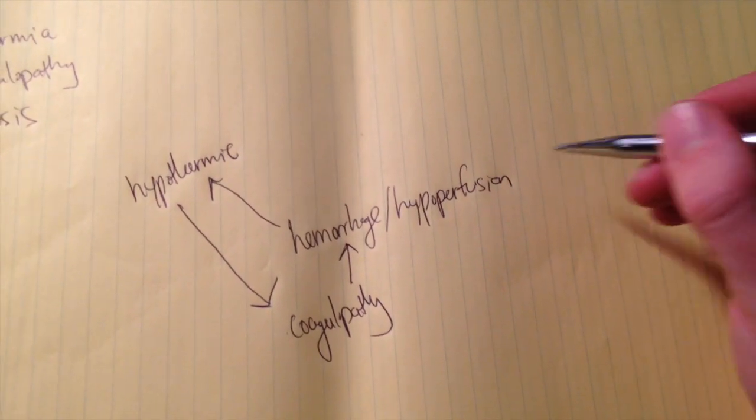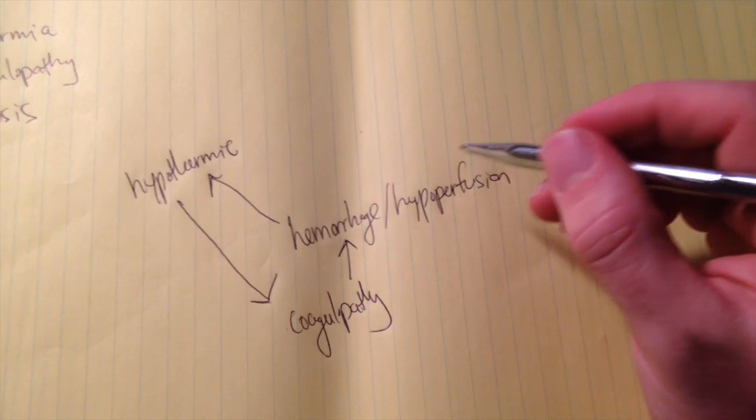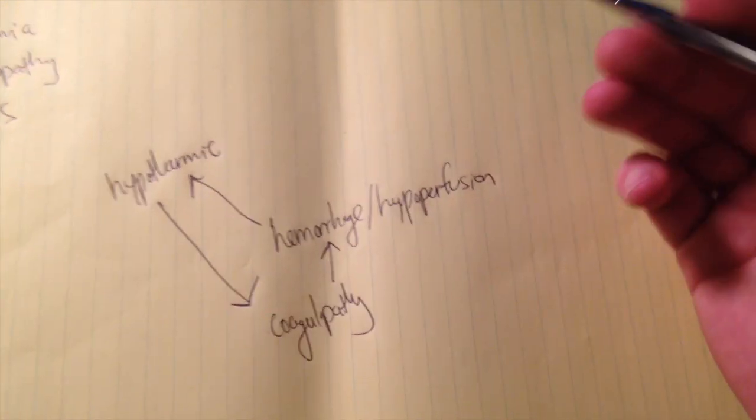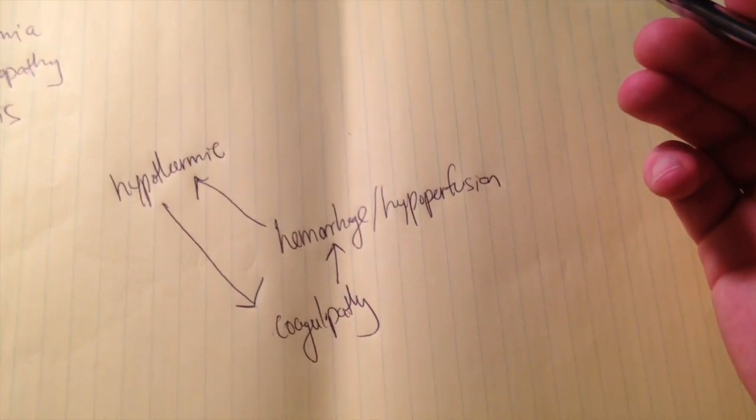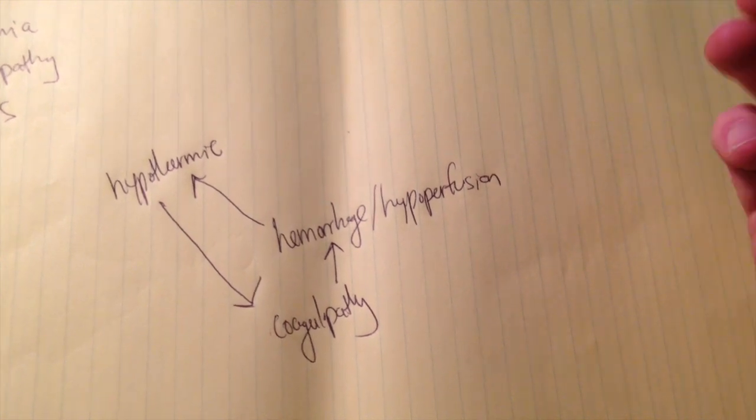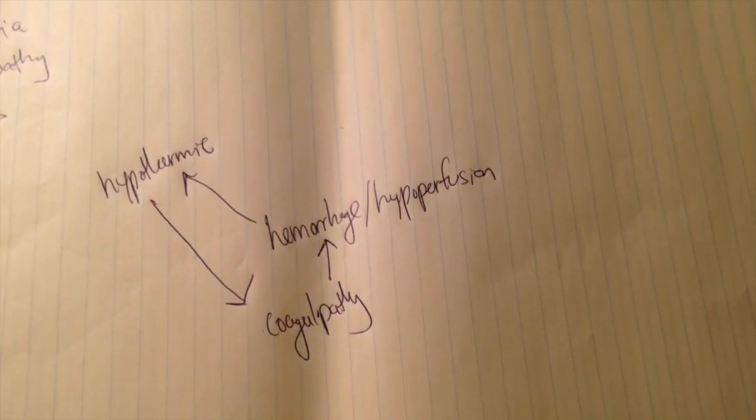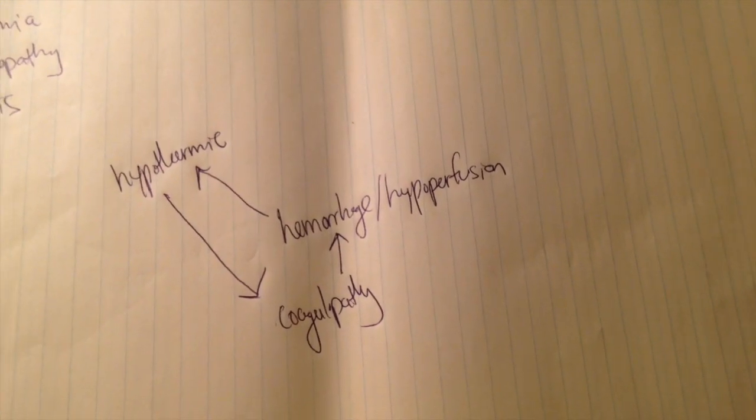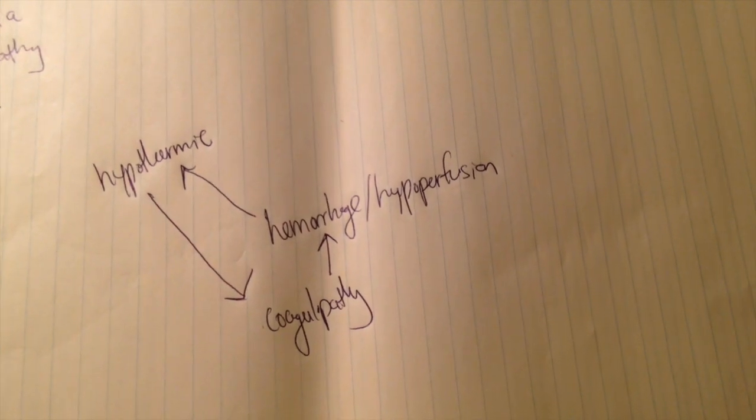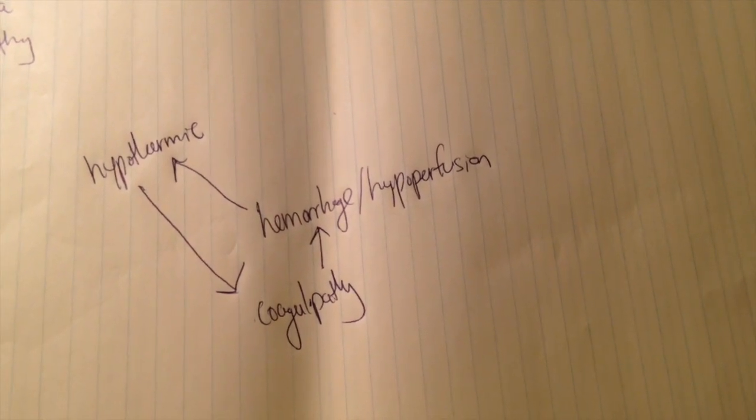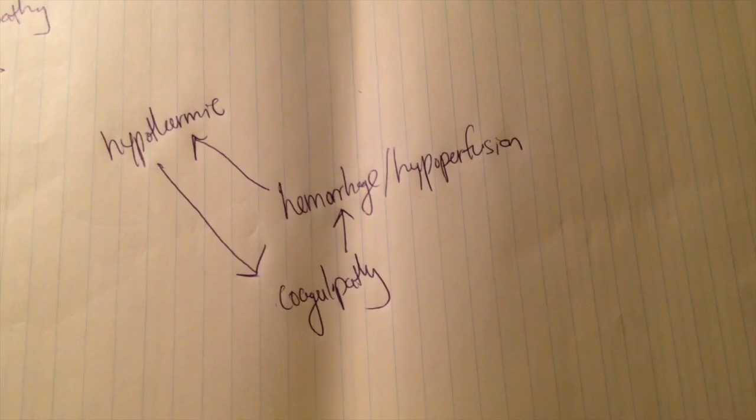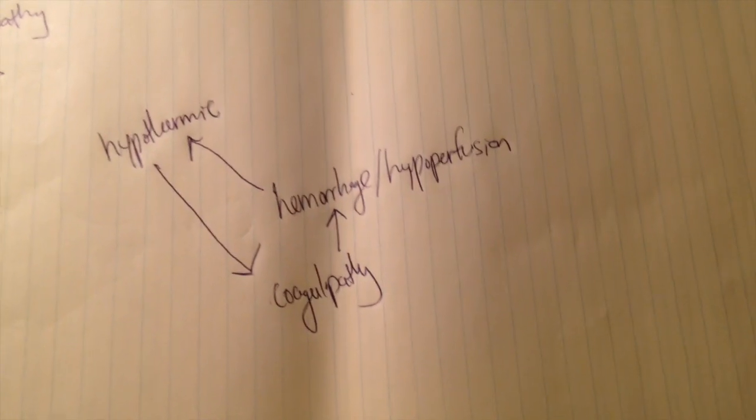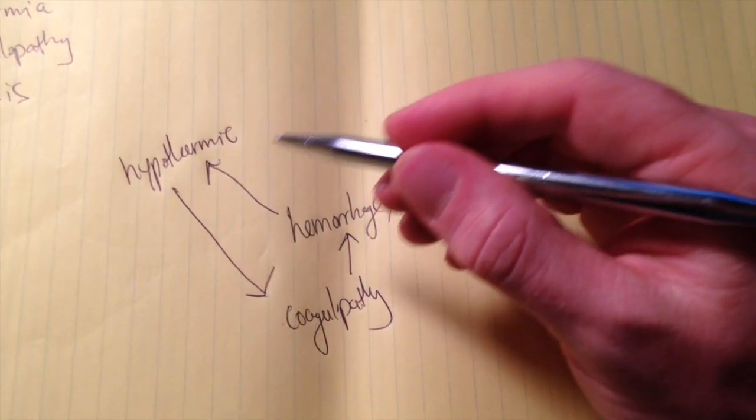The other arm is acidosis. We can imagine if somebody's hypovolemic, if they have hypoperfusion, that's going to reduce the oxygen delivery to their tissues. They're going to be anemic from acute blood loss. Their blood is not going to have as much oxygen content. They're also going to vasoconstrict in response to the hypothermia and blood loss.